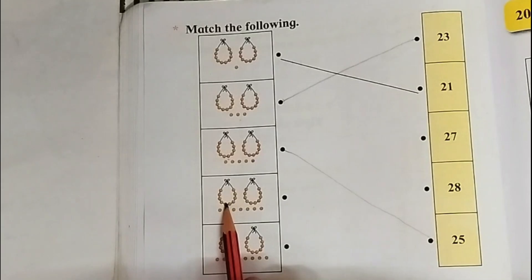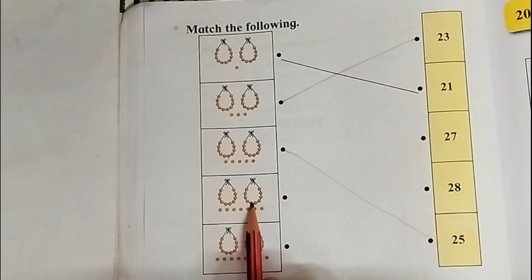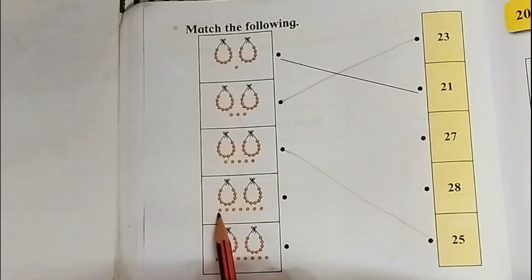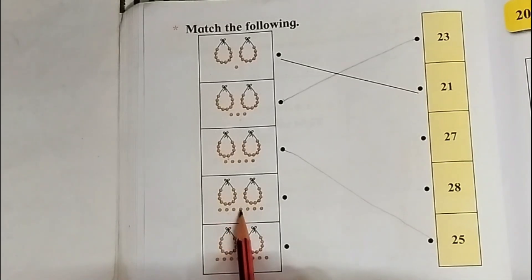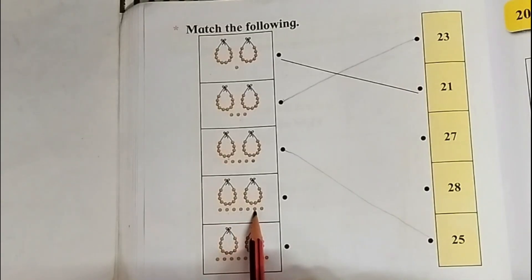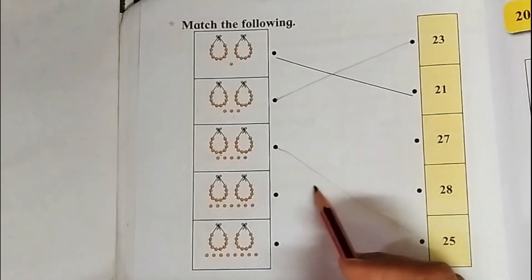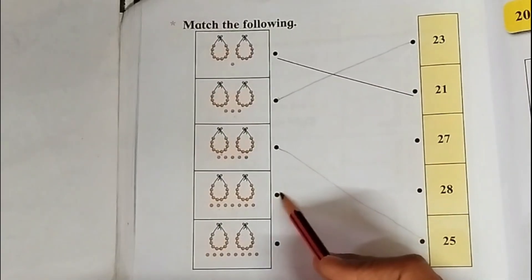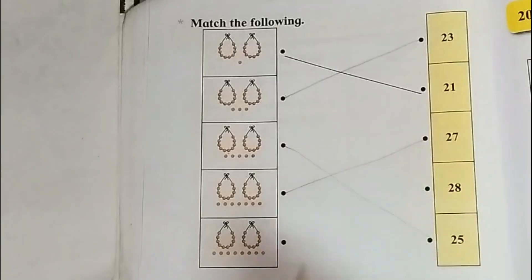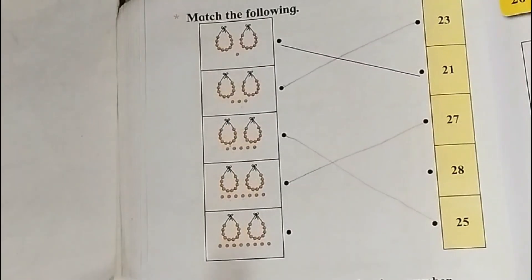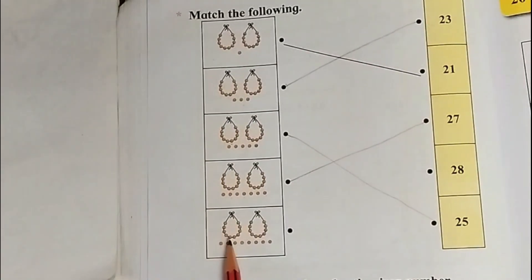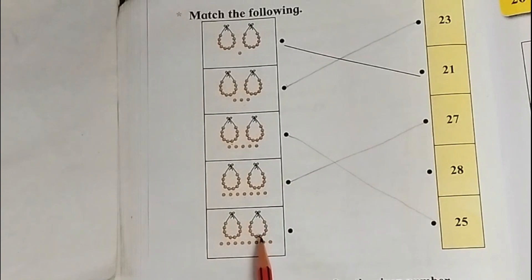Next: 10 beads and 20. Then 21, 22, 23, 24, 25, 26, 27. In figures: 2, 7 = 27. You will match this.